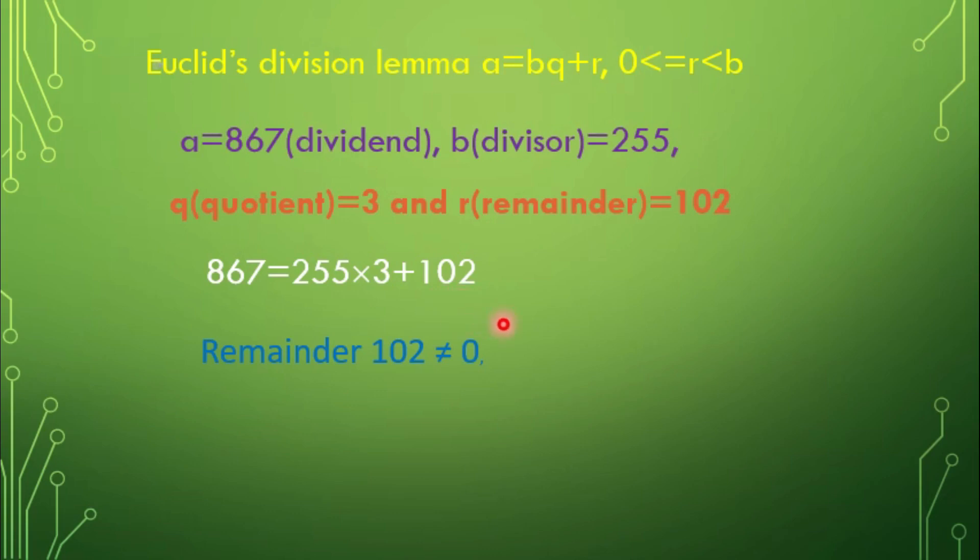We have to do division again because our remainder is 102. We should repeat this process until we get remainder as 0. Therefore, now taking 255 as dividend and 102 as divisor.